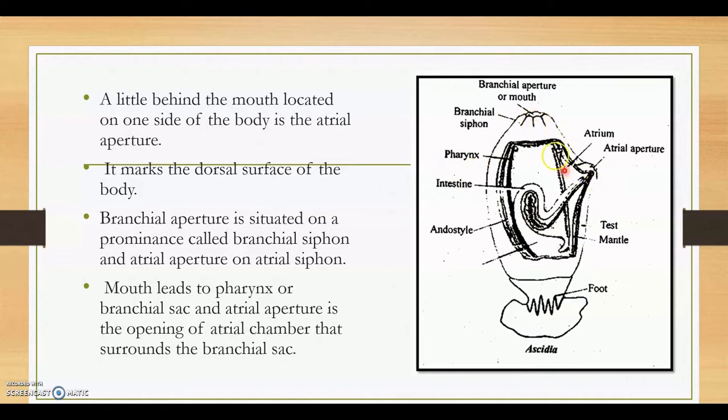A little behind the mouth is located the atrial aperture. It marks the dorsal surface of the body. This is the dorsal surface of the body. The brachial aperture is situated on a prominence called a brachial siphon. This is a brachial siphon. On the top you can see the mouth here and you can see a prominence here. There is an atrial siphon on the top where you can see the atrial aperture. And you can see a prominence here.